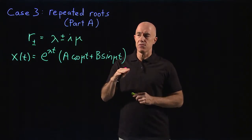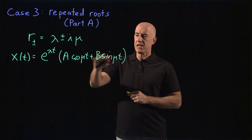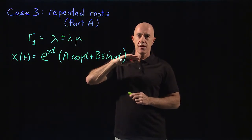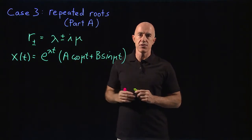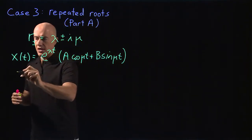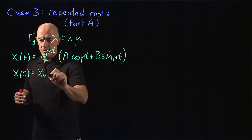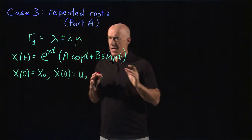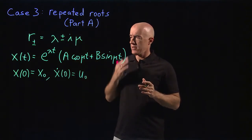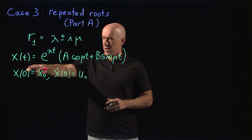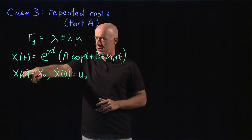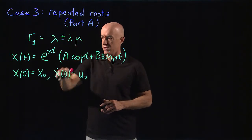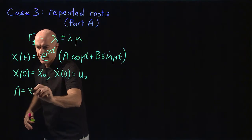To make this precise, we derive the solution satisfying two initial conditions: x of 0 equals x0 and x dot of 0 equals u0, then replace the coefficients a and b using x0 and u0. Applying x of 0 equals x0: e to the 0 is 1, sine of 0 is 0, so immediately a equals x0.